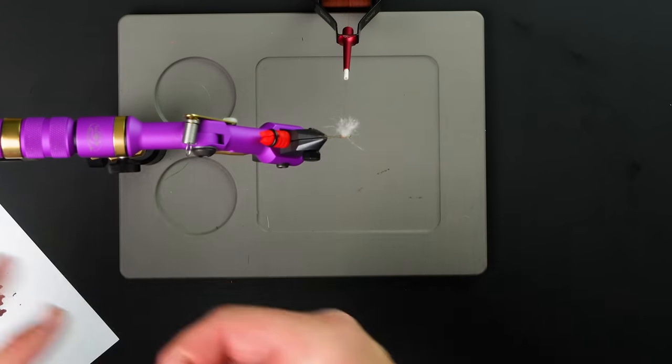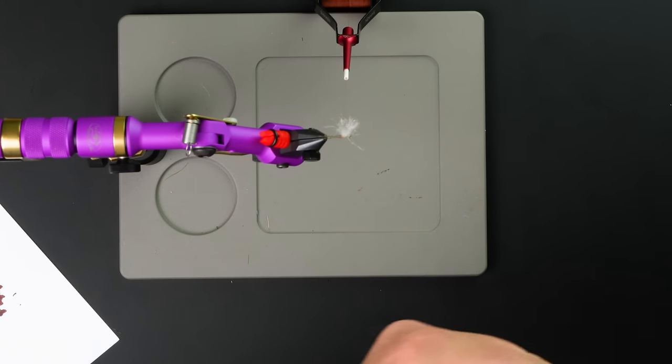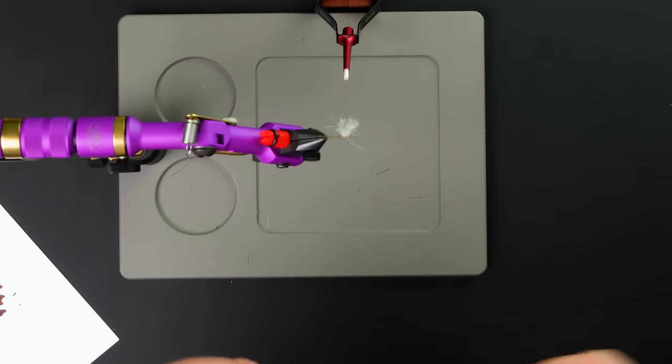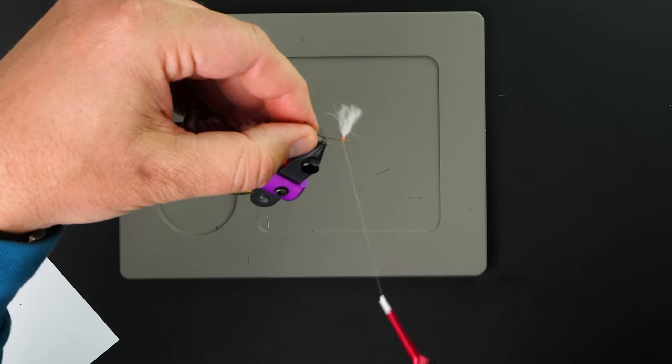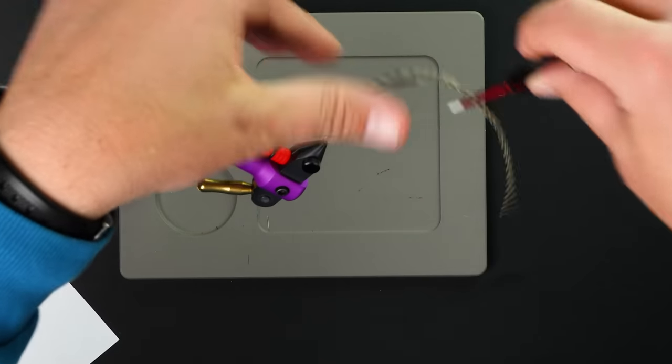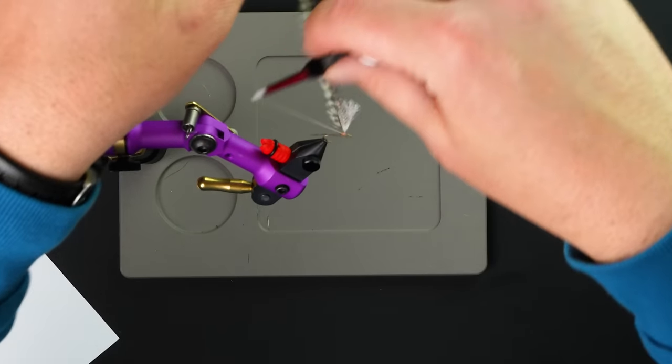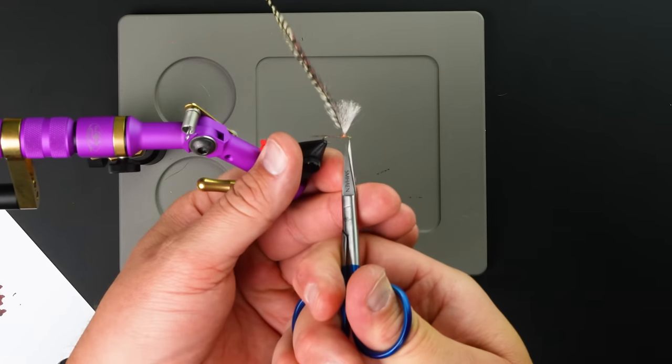Here I have a parachute-ish type fly with grizzly hackle fibers for the tail and a dubbing body, so this is kind of like an Adams. I'm just going to trim the stem. We have other skill builders on how to tie parachutes, so I'm just going to kind of go quickly here. We're just going to do the completed fly to show you and give you an idea of what this really looks like.